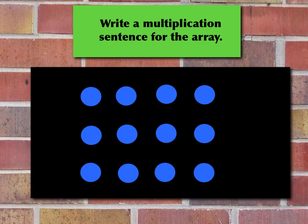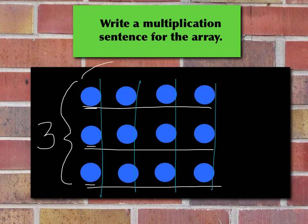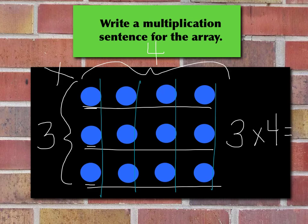Now let's practice writing multiplication sentences when looking at arrays. We're going to write a multiplication sentence for this array. First, let's look at the array — how many do we have in each row? Let's count our rows: one, two, three rows. Rows go all the way across, left to right. Now let's look at our columns: one, two, three, four columns. Our multiplication sentence for this array would be three times four equals — and then we count them all together — twelve. We find our factors by looking at the rows times the columns, and that gives us our multiplication sentence.